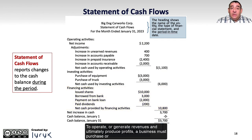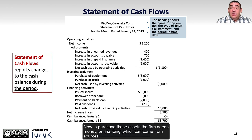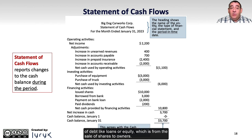To operate, or generate revenues and ultimately produce profits, a business must purchase or invest in assets — things like equipment, factories, or even something as simple as a computer. Now to purchase those assets, the firm needs money, or financing, which can come from sources of debt like loans, or equity, which is from the sale of shares to owners.